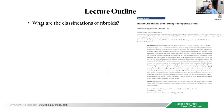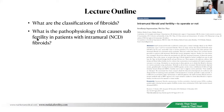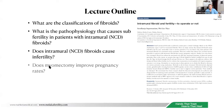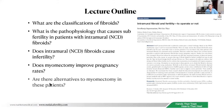My lecture outline covers the classification of fibroids, the pathophysiology of subfertility in patients with intramural non-cavity-distorting fibroids, whether intramural fibroids cause infertility, whether myomectomy improves pregnancy rates, and finally, alternatives to myomectomy in patients with cavity-distorting fibroids. All of this is written in a published paper also titled 'Intramural Fibroid Infertility: To Operate or Not.' If you Google it, you can get the whole paper.